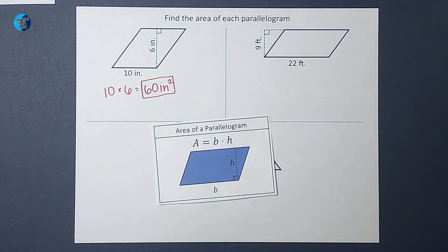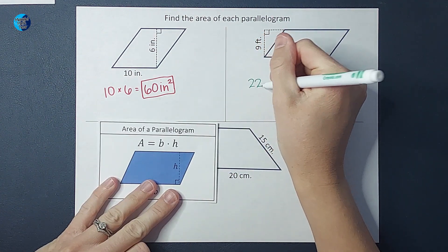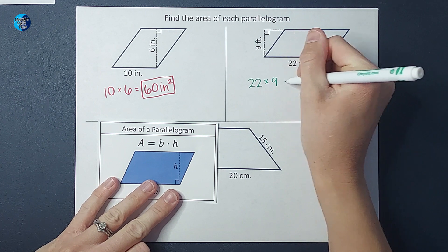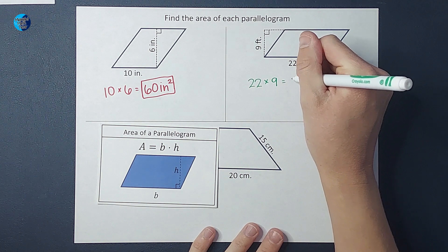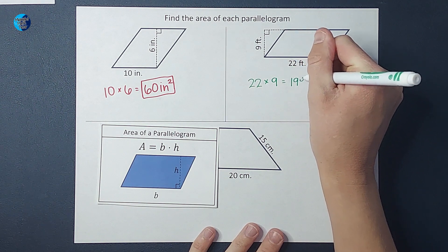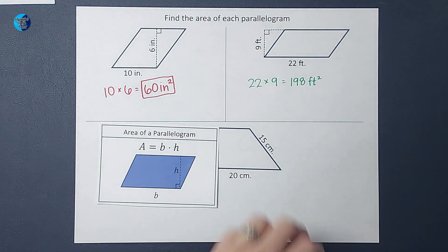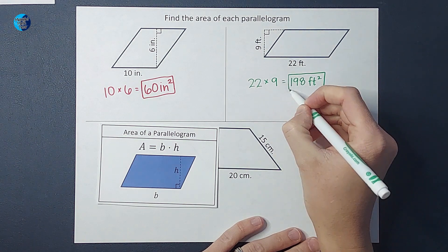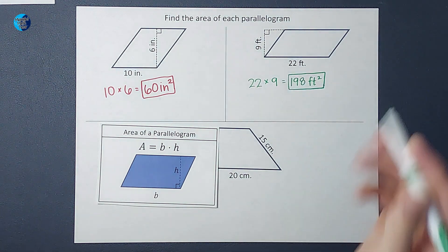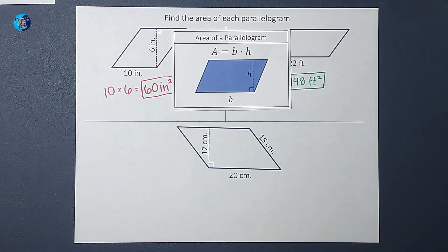Alright, let's go ahead and look at our next one. We have a base of 22 feet and a height of 9 feet. 22 times 9 gives me 198 feet squared, or we could say square feet. That's how you hear it a lot of times when people are talking about houses or carpeting a room. You'll hear them say square feet, same as feet squared.